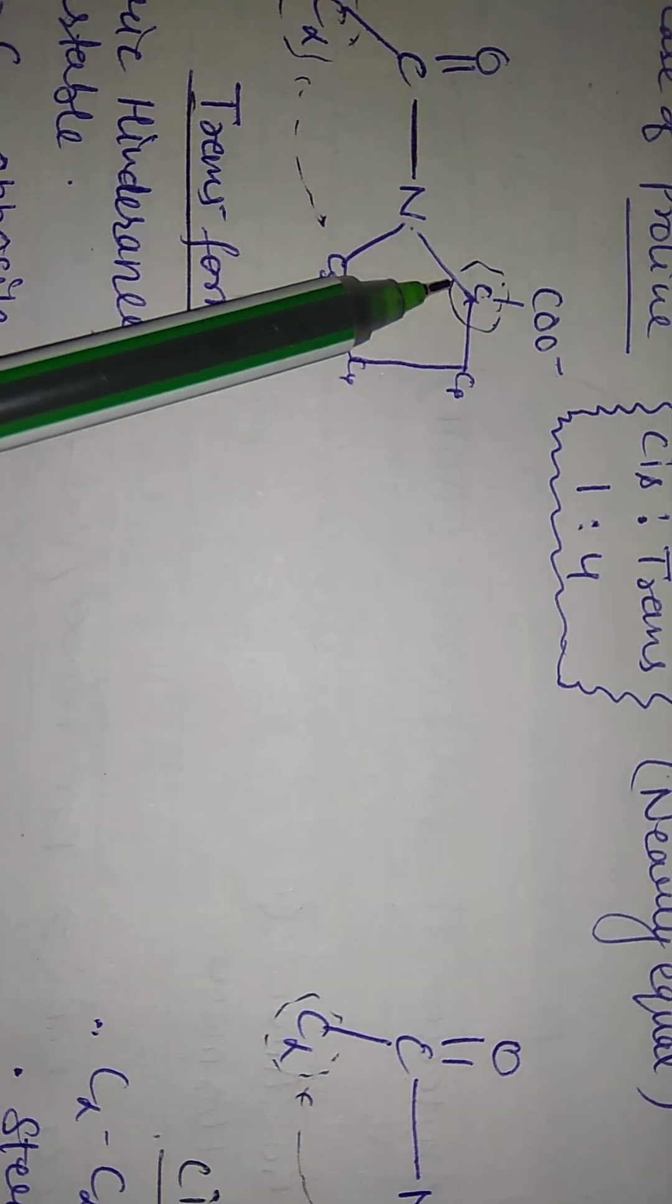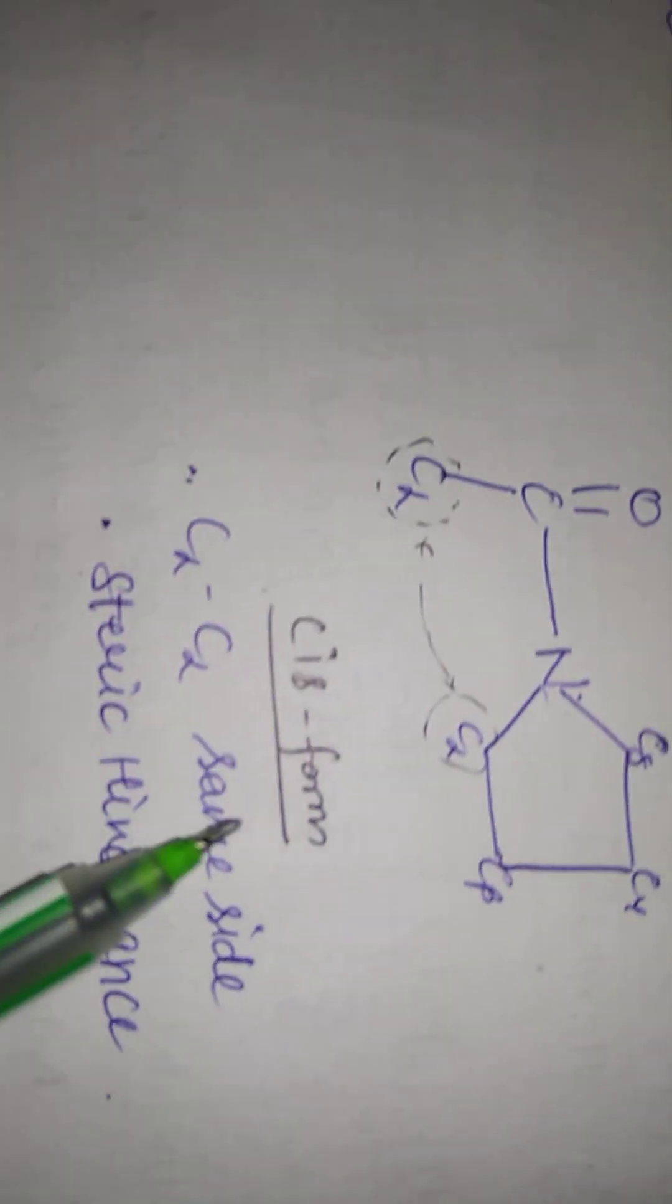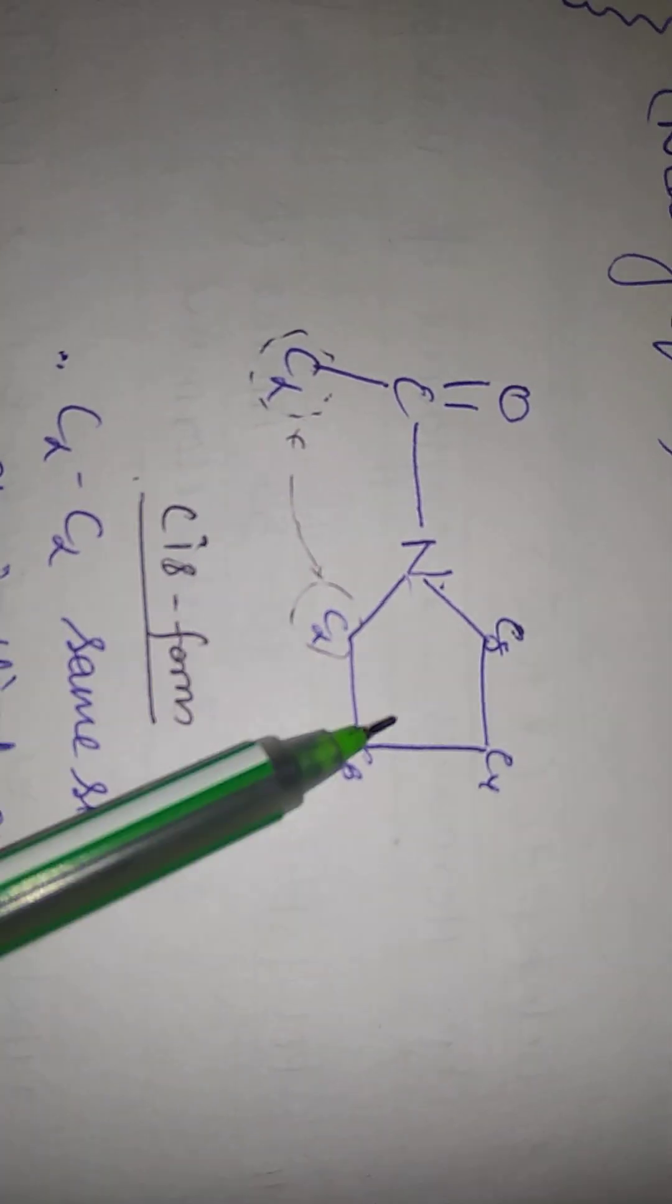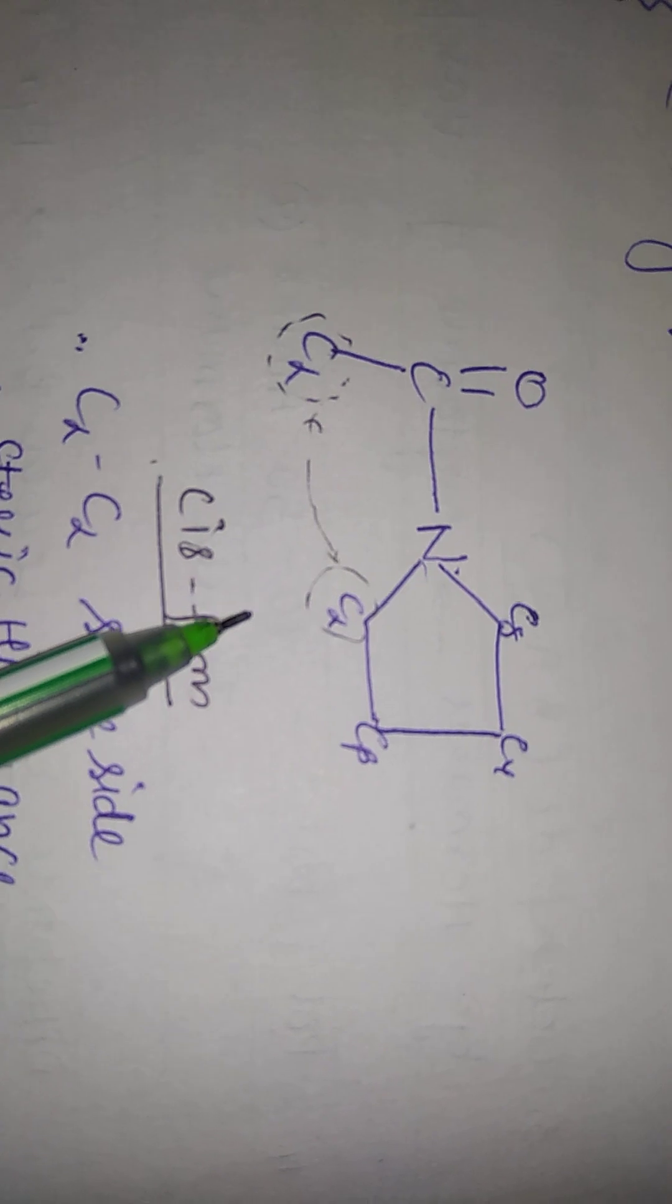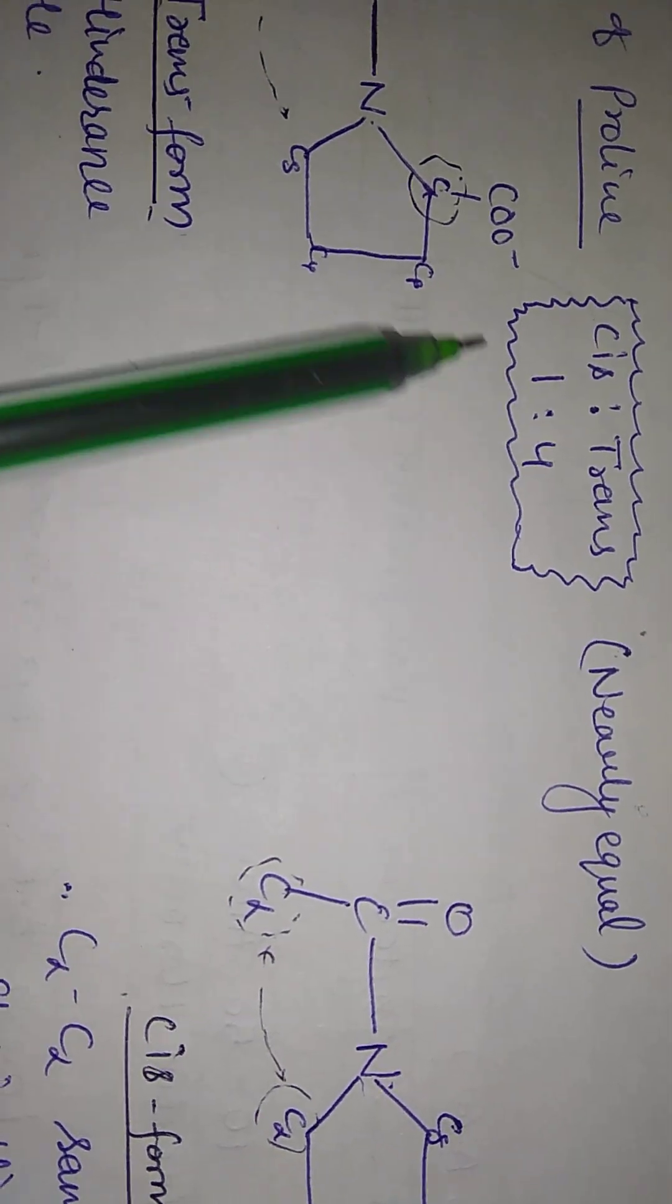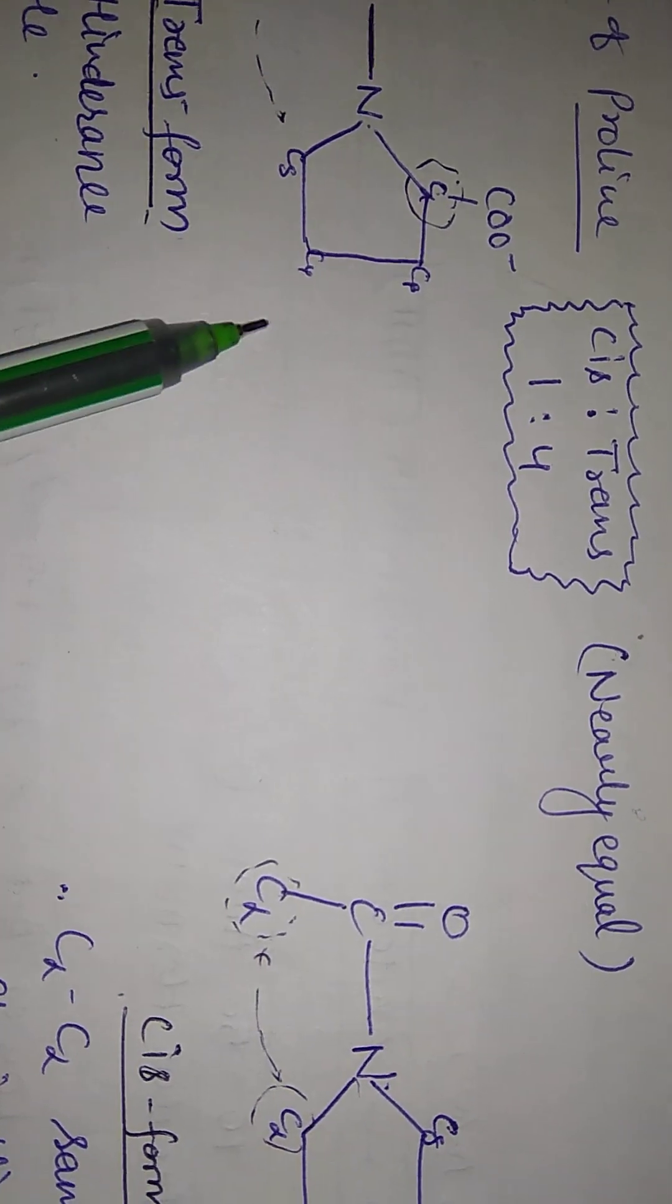This is also a steric hindrance. Although C-alpha C-alpha is opposite side. If we see that the other side of the cis type, steric hindrance is very much. So it will be flipped. It will be unstable. But what is it? It is not stable. So it is less stable. Because it is a cyclic group.